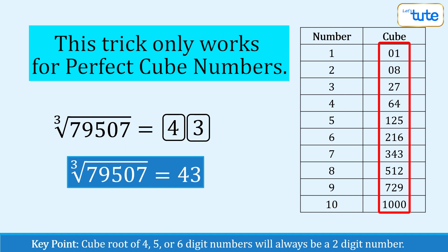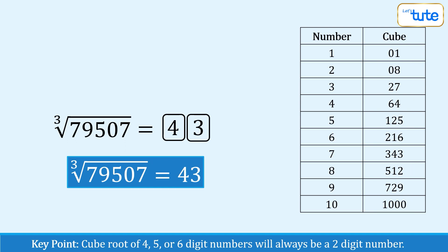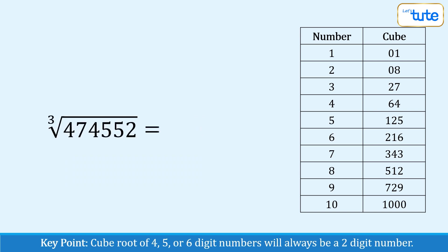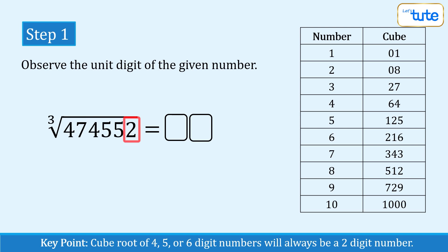Now let's use this technique to find the cube root of a much bigger number, let's say 474552. So since this number has 6 digits, its cube root must be of 2 digits, correct? The first step is to observe the unit's place digit of the given number which is 2 in this case. What's the next step?